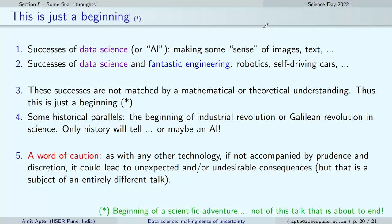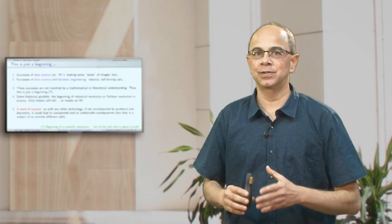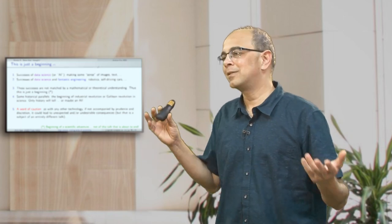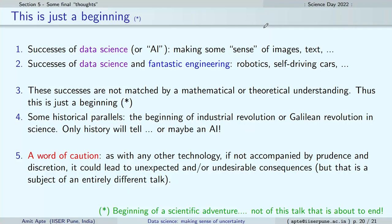There are quite a few successes: understanding images, producing or analyzing text, and engineering topics like robotics and self-driving cars that combine fantastic engineering with methods from data science. But still there is quite a bit lacking in terms of understanding why these systems work so well. We do not yet have the precise mathematical or theoretical framework to understand these topics — so maybe we are somewhere at the beginning of the industrial revolution, or where Galileo was trying to understand what exactly science is.